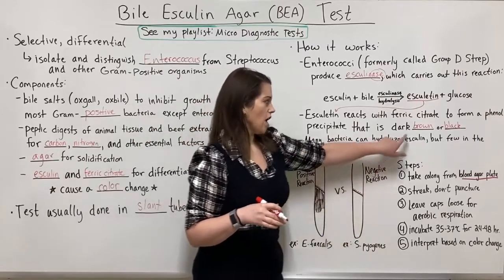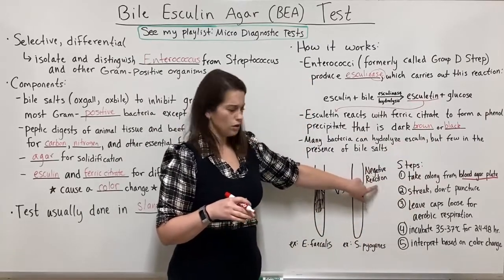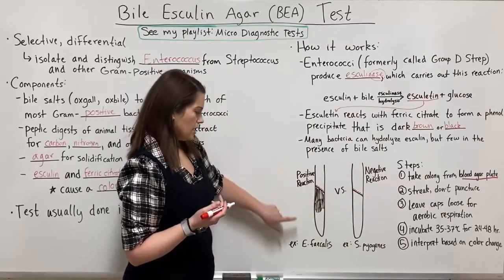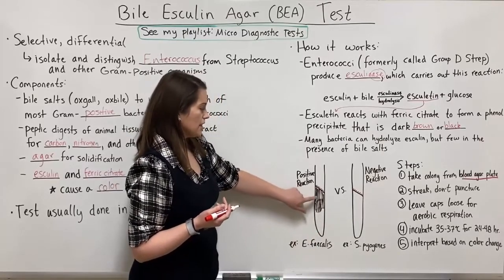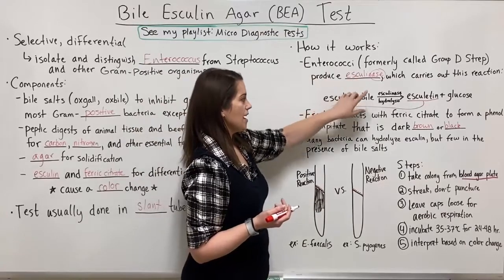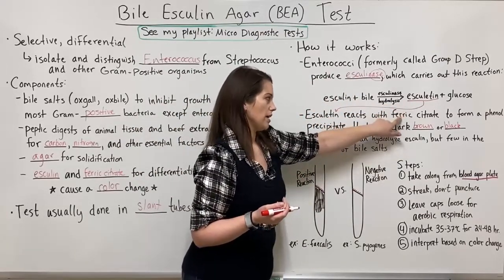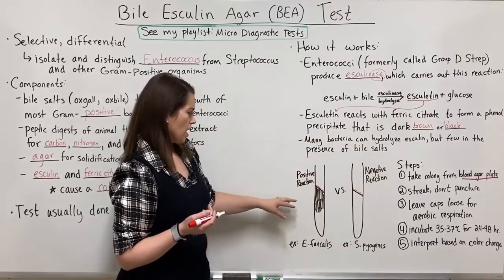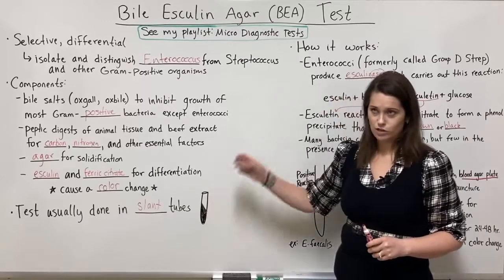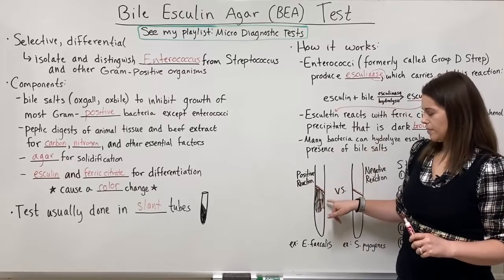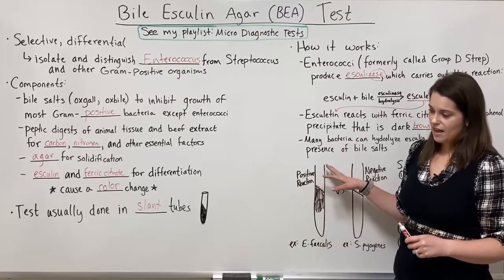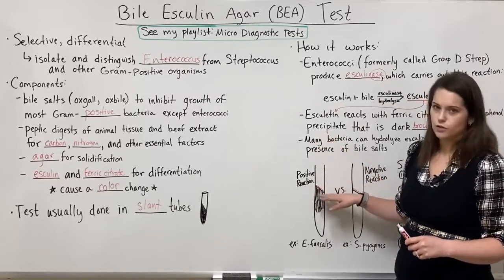If there's no color change — none of that dark brown or black — that's a negative result. An example of a negative result would come from Streptococcus pyogenes. A positive result, like you would get with Enterococcus faecalis, is where you see dark brown or black coloration forming — that precipitate from the reaction of esculetin with ferric citrate. The brown or black color might fill the entire agar, especially in a smaller tube, or it might only fill the upper portion, depending on the amount of activity, the number of enterococci cells, and how long the precipitate takes to diffuse through the medium.